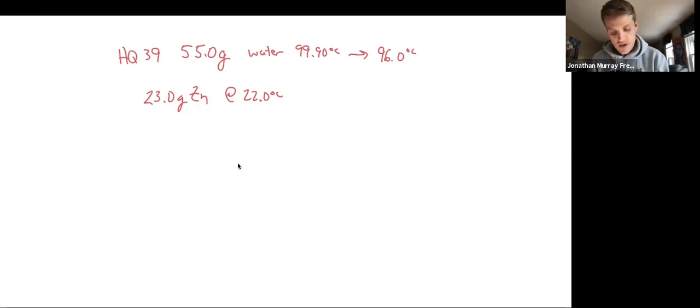So we're gonna do the same two calculations: Q equals MC delta T, right? We're gonna do it for the water first, and then we'll do it for the zinc next.